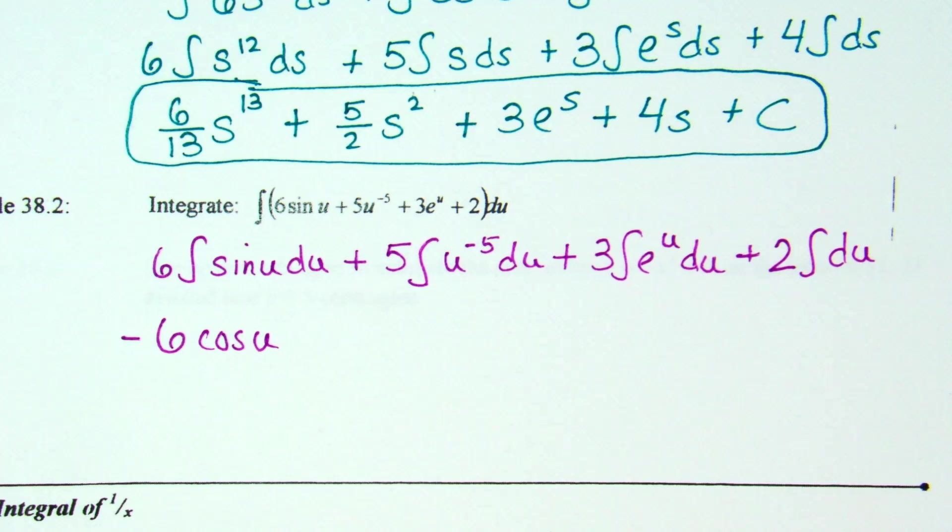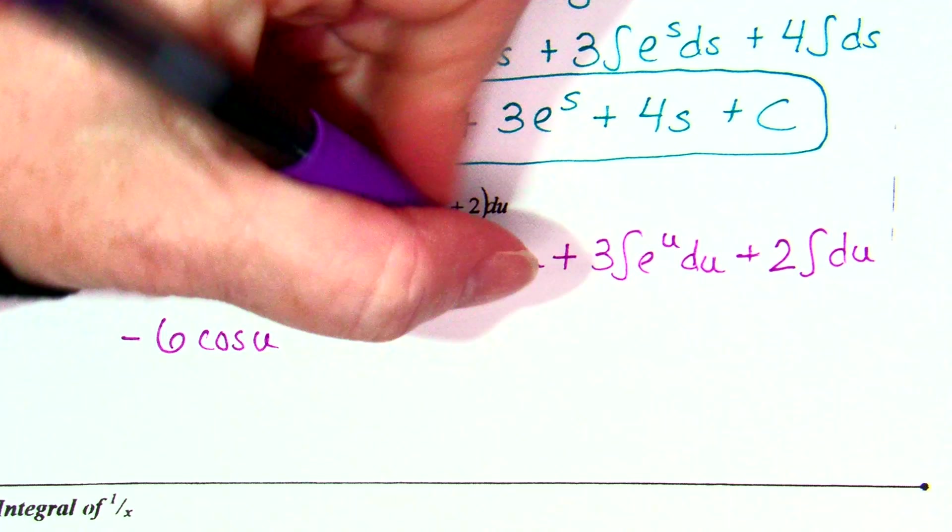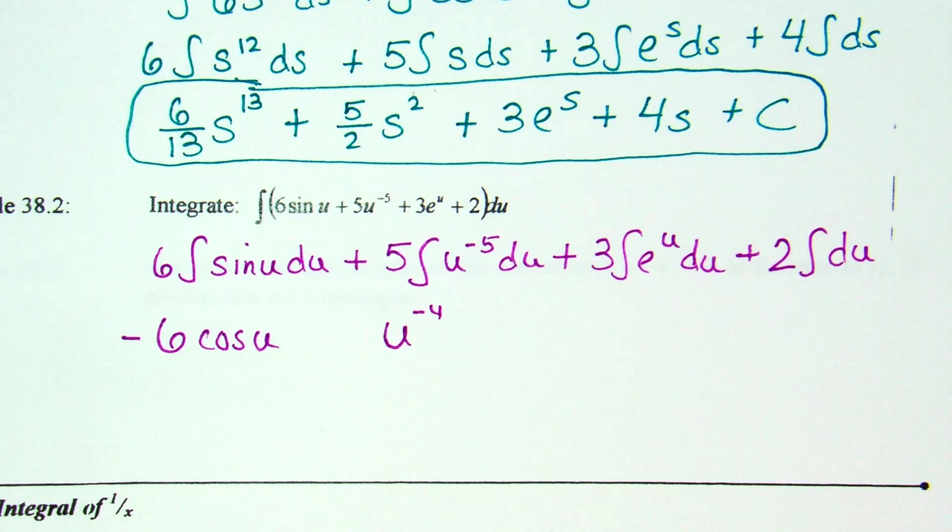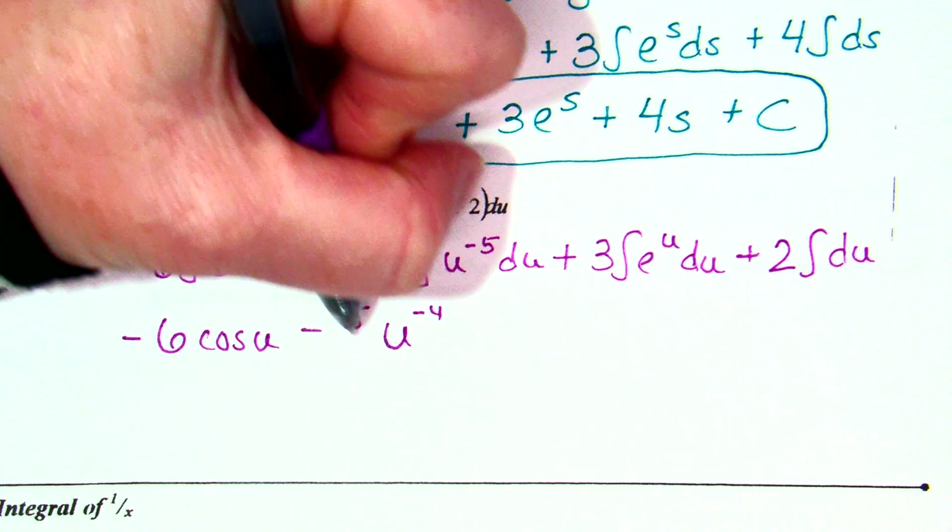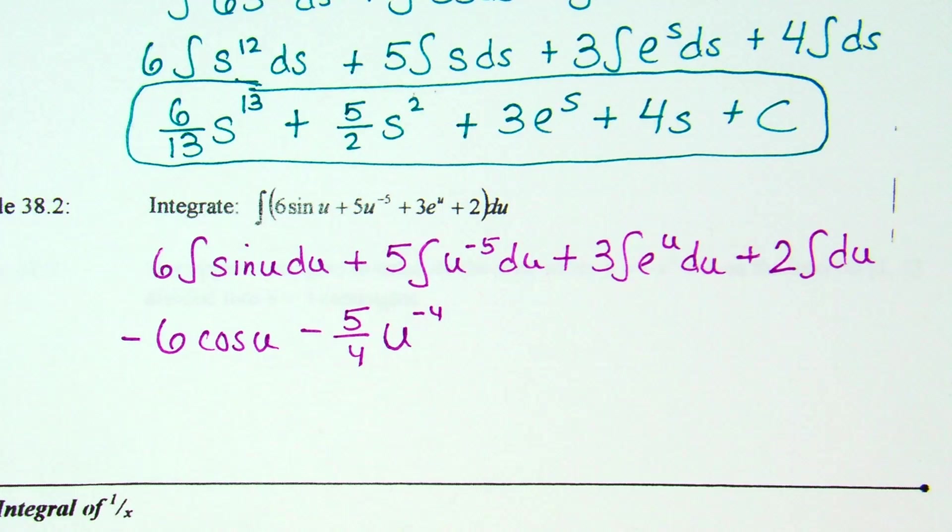U to the negative 5th. What do I do? You add 1, so it becomes u to the negative 4th. That means we have to divide by negative 4. So it's going to be minus 5 over 4. And I just left it as u to the negative 4th. Could you take that u to the negative 4th in the denominator and rewrite it? Yes. I'm leaving my negative, though.